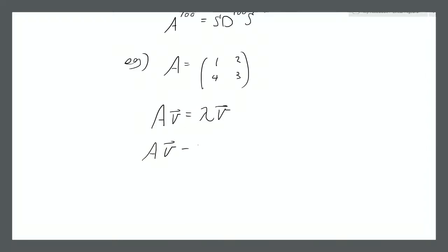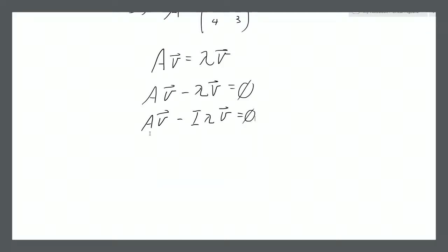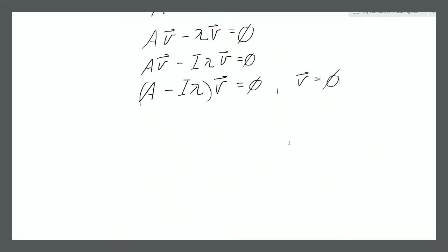So A times v minus lambda times v equals 0. We can write that as A times v minus the identity matrix times lambda times v equals 0. Factoring out v, we get (A minus I*lambda) times v equals 0. We want solutions other than v equals 0 — we don't want that trivial solution. And if non-trivial solutions exist, that means the determinant of (A minus I*lambda) must equal zero.